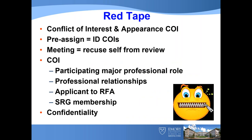Now some red tape you've got to understand for the reviewers. Conflict of interest is one of the major things they care about. All of us as reviewers are informed about the conflict of interest policy or the appearance of conflict of interest. Before the assignments of the grants take place, the SROs — Scientific Review Officers — will send a list of all the applications for that panel and session to the reviewers.